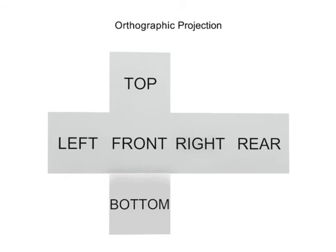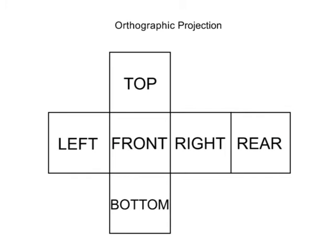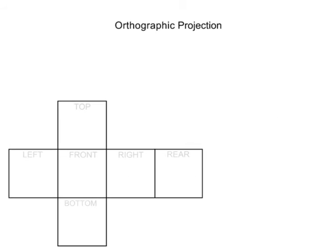The orthographic method shows each of the six main views of a three-dimensional object separately on a two-dimensional drawing. To obtain each of the views of an object, imagine that the object is within a glass box.